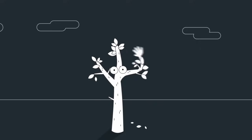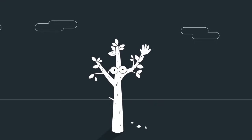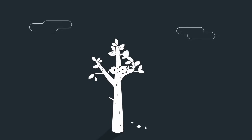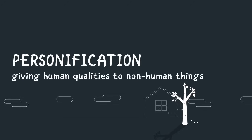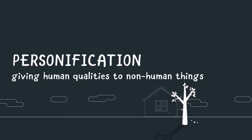In each example, the tree acts like a person. This is personification. Personification gives human qualities to non-human things. How would you use personification to describe a falling leaf?